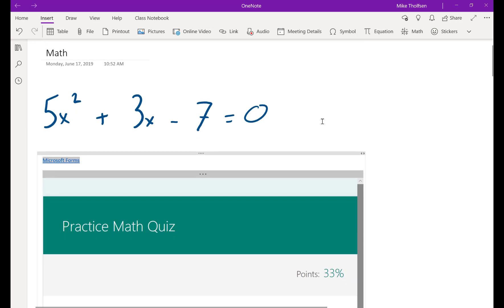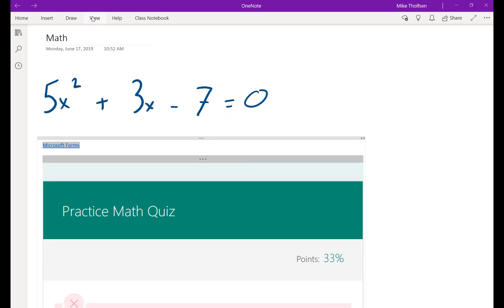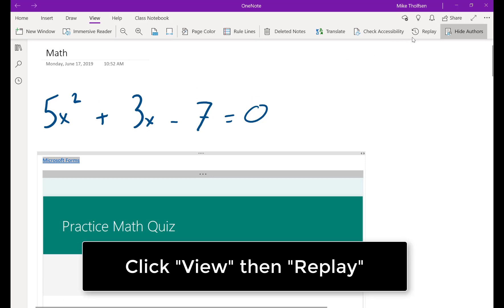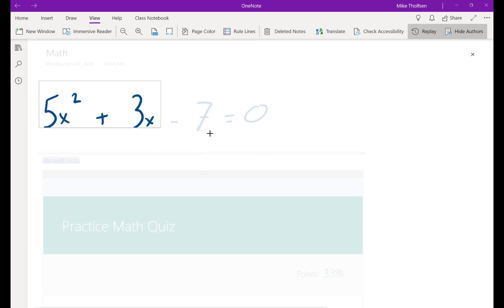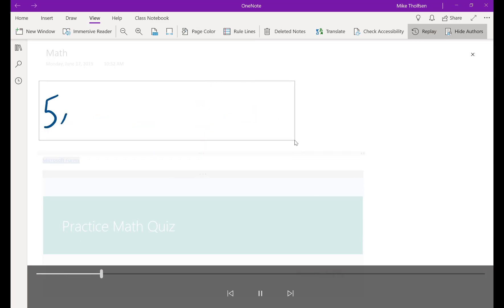Now the last thing I want to show is something that's called ink replay. So if I'm an educator and I want to watch how an equation was built, I go in the view menu and click replay and I can select the equation I want to replay and watch what happens. It actually writes it right back out for me.